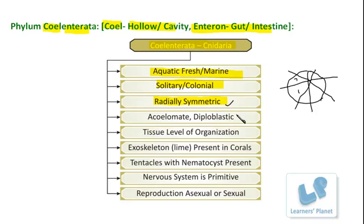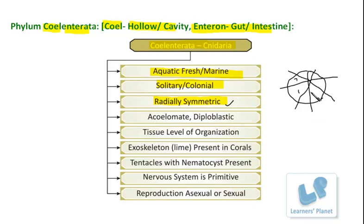In these organisms, the radial symmetry is found. If you observe hydra and divide it through any plane radially, you will see that the sections are symmetric to each other.